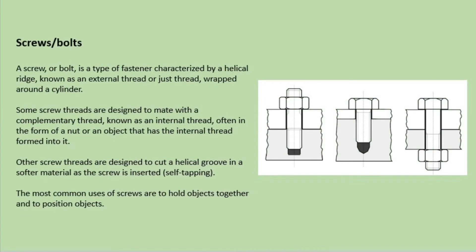Screws and bolts. A screw or bolt is a type of fastener characterised by a helical ridge known as the external thread, or just thread, wrapped around a cylinder. Some screw threads are designed to mate with a complementary thread known as an internal thread, often in the form of a nut or an object that has an internal thread formed into it. Other screw threads are designed to cut a helical groove in a softer material as the screw is inserted. These are known as self-tapping. The most common uses of screws are to hold objects together and to position objects.